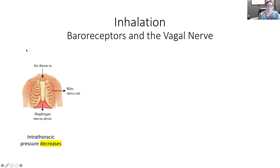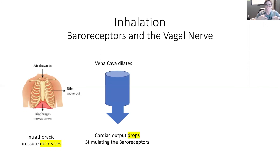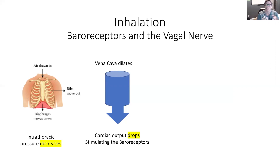So let's look at inhalation. As we breathe in, the diaphragm pulls down and the ribs expand, creating a lot more space in the chest cavity, which means pressure drops. When pressure drops, the vena cava — the vessel bringing all the blood back to the heart — widens because there's no pressure squeezing it. That means blood takes longer to come back to the heart, so cardiac output drops because we have less fluid coming in and therefore less leaving the heart.